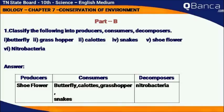The answer: Producer — Shoe Flour. Consumers — Butterfly, Carrots, Grasshopper. Decomposer — Snakes.